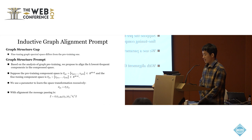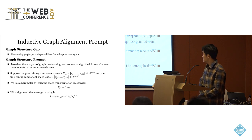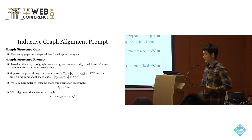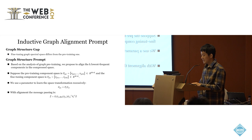And then, for the graph structure gap, based on the analysis of the graph pre-training process, we can alleviate this gap by aligning the low-frequent spectral space. We model the alignment process as a space transformation, and the prompt is actually the transformation matrix. With alignment, we have the following message passing process.